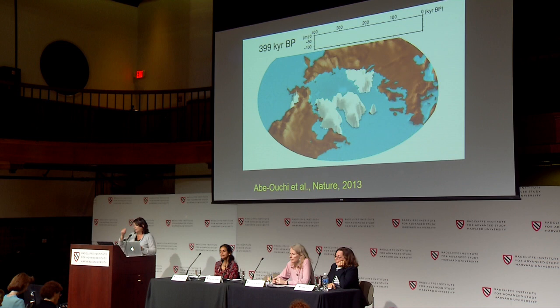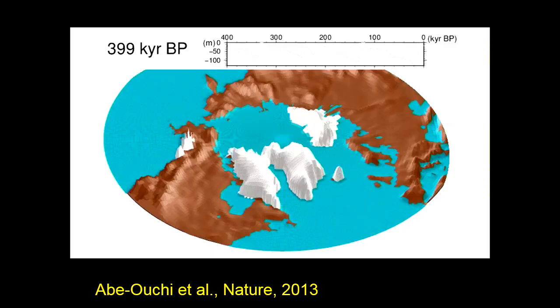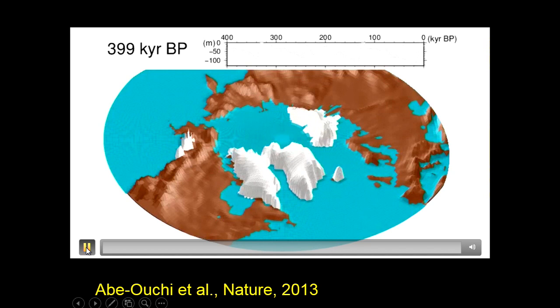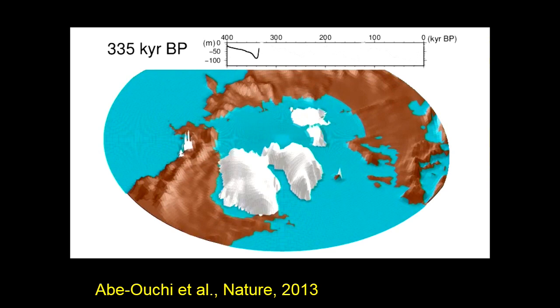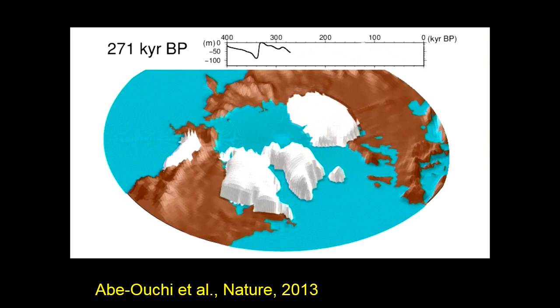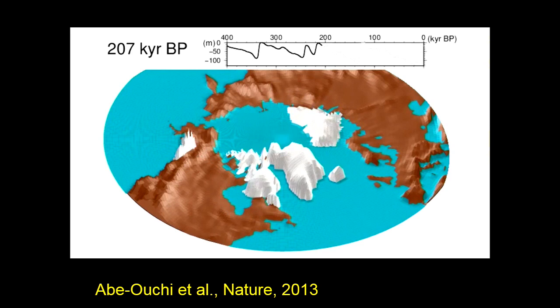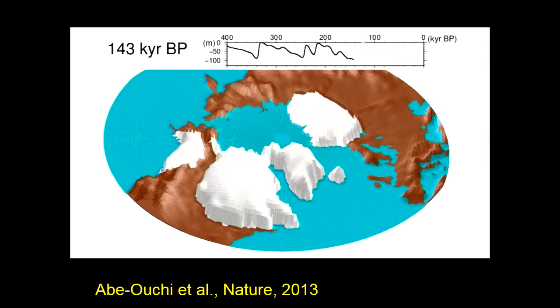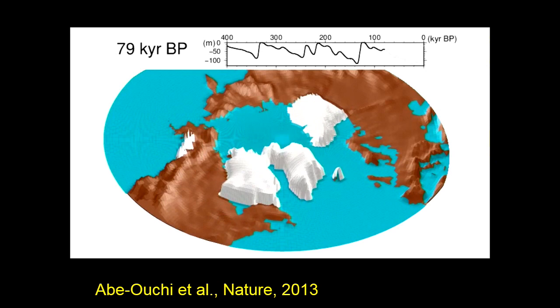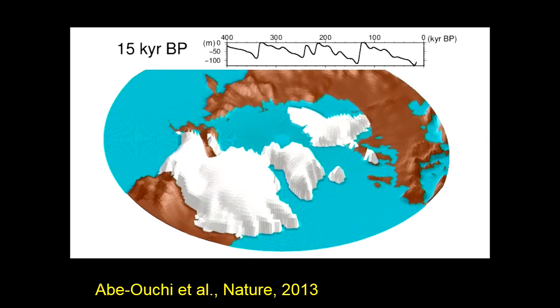Everything I know about every climate change that has happened in the past can be explained by changing just these three variables. This is a climate model with an ice sheet embedded in it, showing the last 400,000 years with a sea level scale, using only the variables of our variable orbit around the Sun, changes in the Earth's precession and axial tilt, and CO2 changes we know from ice cores. And it looks remarkably like what we know climate actually did.